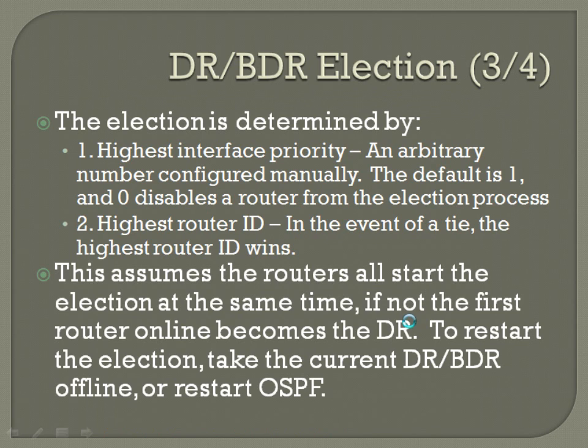You have to have a DR/BDR election to determine which routers are preferred to be your designated router and backup designated router. The election is determined by, first, the highest interface priority. Interface priority is an arbitrary number configured manually. The default on all your OSPF routers is going to be 1. Higher numbers are preferred. If you manually set the value to zero on a router, it no longer takes part in the election process for DR/BDR.